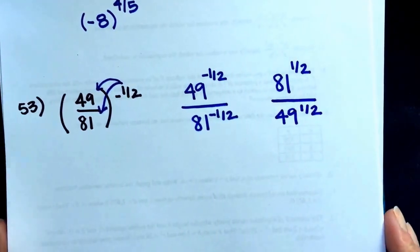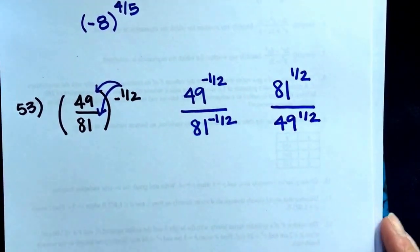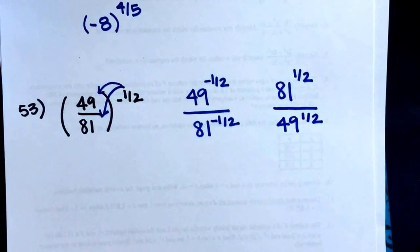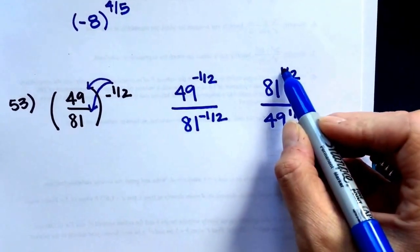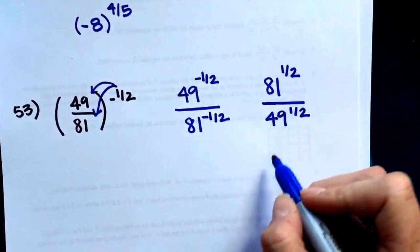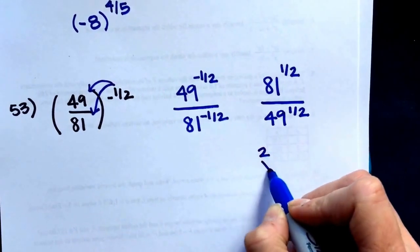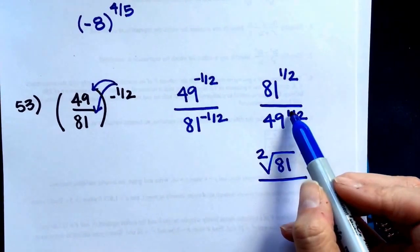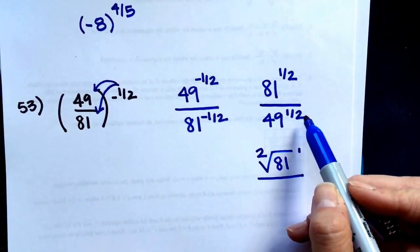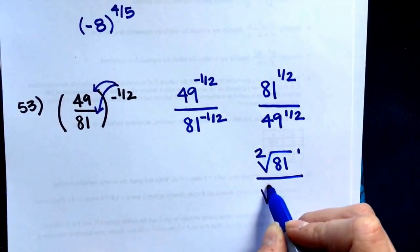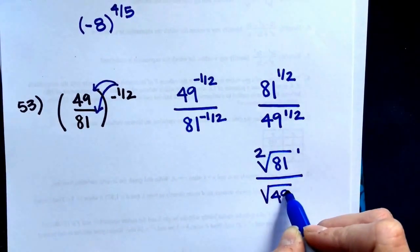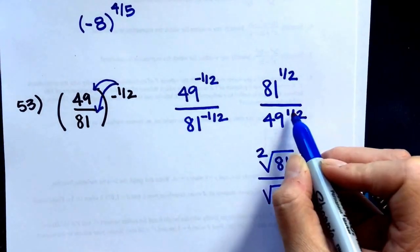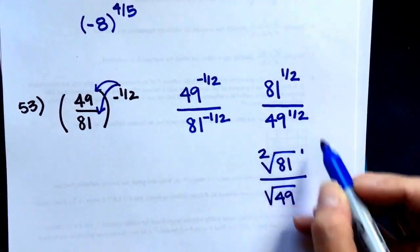It's probably easier to simplify these if you write them as radicals. 1 half, 1 is the exponent, 2 is the root. So it's the square root of 81 to the first. And on the bottom, power over root, so 49. Second root, first power. Power over root, so the power is 1, root is 2.